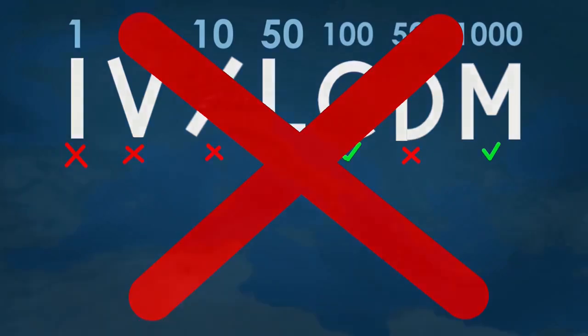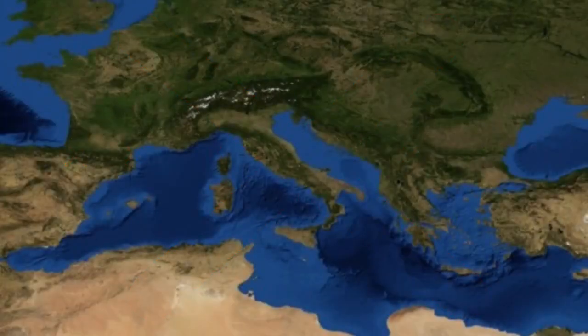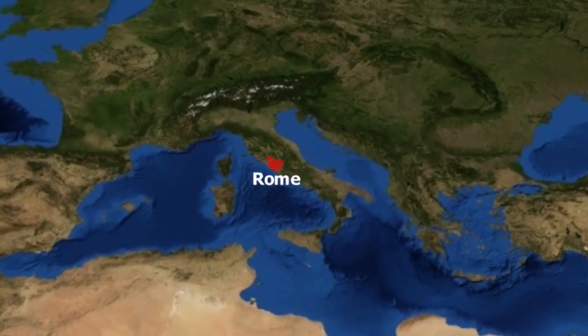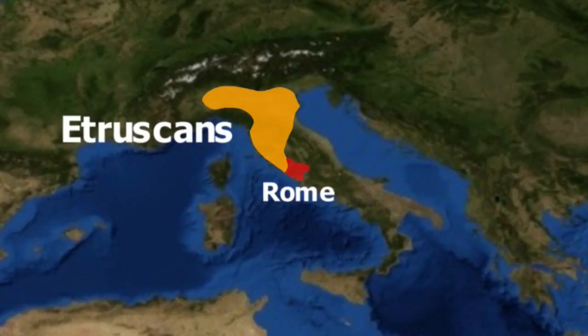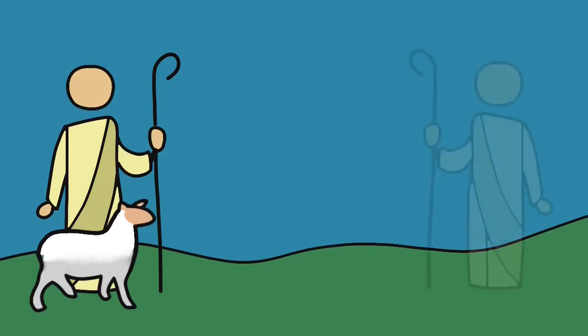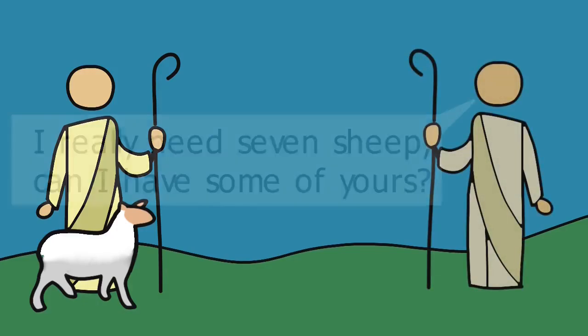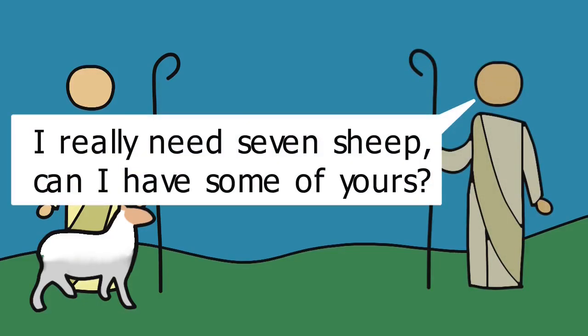So what is it? Let's take a look at this map. Here is Rome around 400 BC. To the north of Rome were the Etruscans — and it is there that our story begins, with the daily life of shepherds at this period.